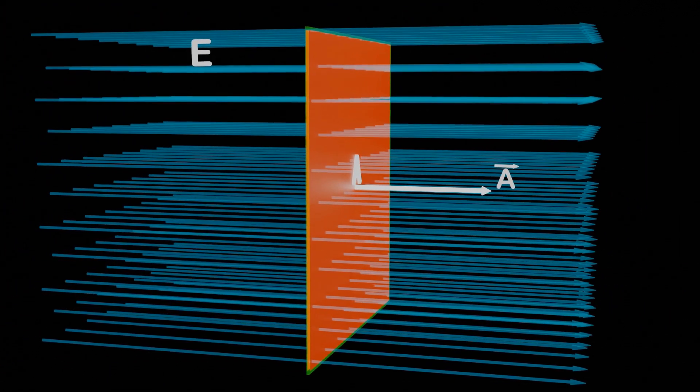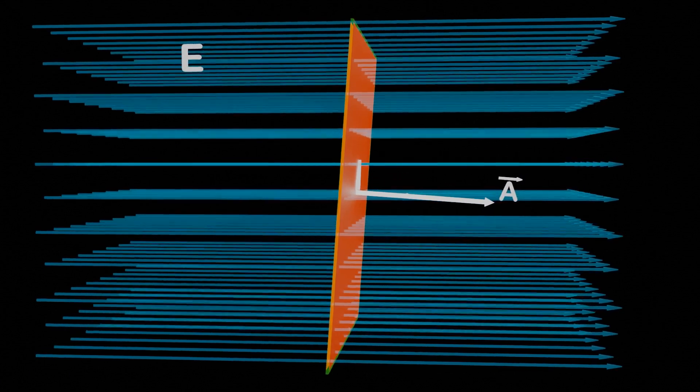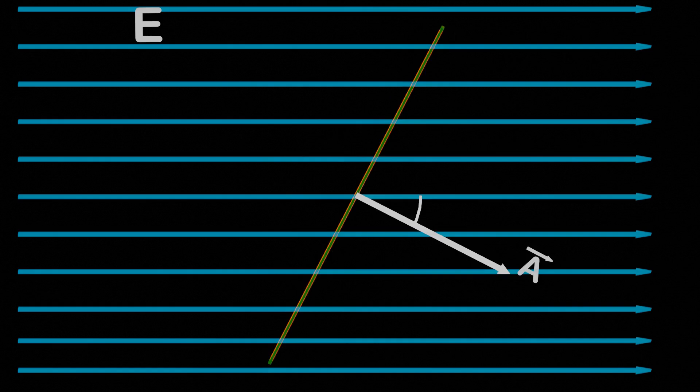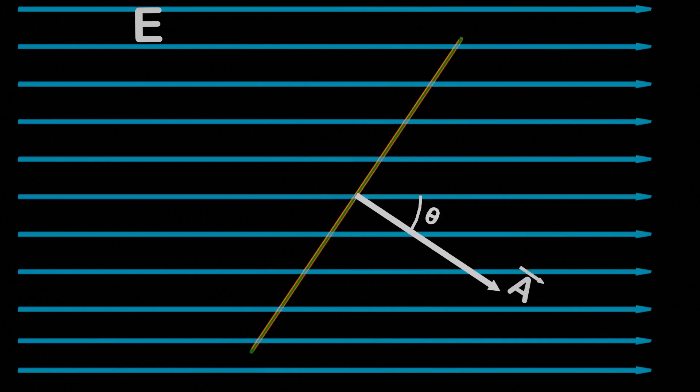Now with the help of the angle between the area vector and the electric field, we can determine at what angle the plane has tilted with respect to the electric field when it is rotated.